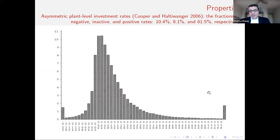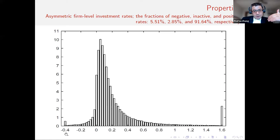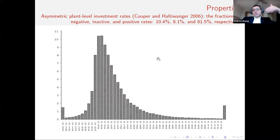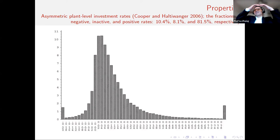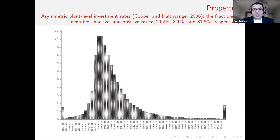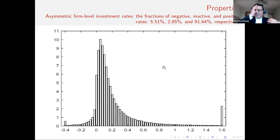Comparing with Cooper and Haltiwanger: 10.4% versus our 5.5% negative, 81.5% versus our 91.6% positive. They are asymmetric too, but the dispersion is much narrower — their whole distribution goes from minus 0.2 to plus 0.8, while we go from minus 0.4 all the way to 1.6. The key issue is they have a sample selection problem — they only work with about 7,000 plants in a balanced panel out of up to 360,000 plants in the universe. If they had all the data, the right tail would be even more massive. If we call their distribution asymmetric with all their sample selection issues, we can confidently call our distribution asymmetric too, with much less sample selection at the firm level.